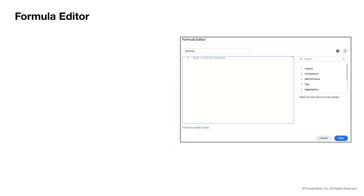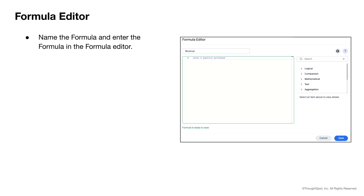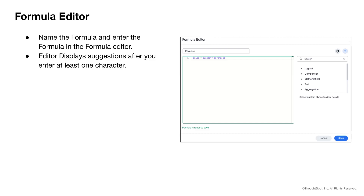Formulas are created using the formula editor. Start by naming the formula and then start building the formula in the formula editor. As you type, relevant suggestions in the form of column names or operators appear to help you. Choose one if it meets your needs.